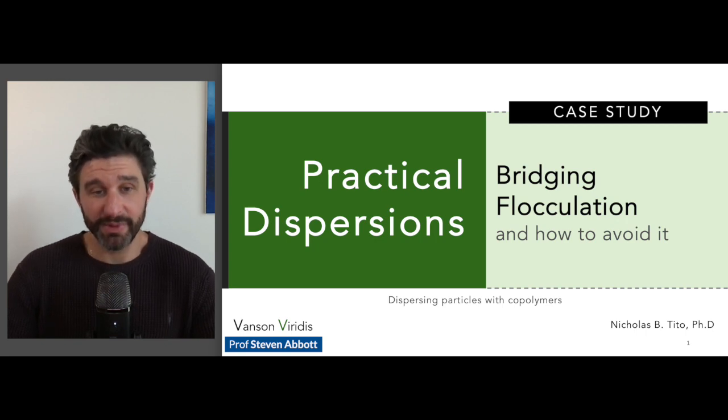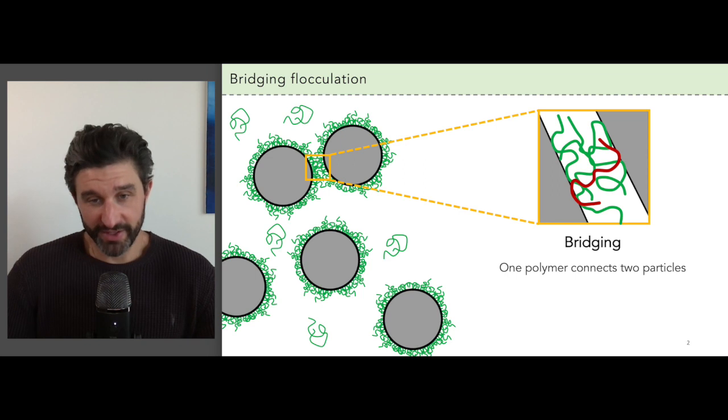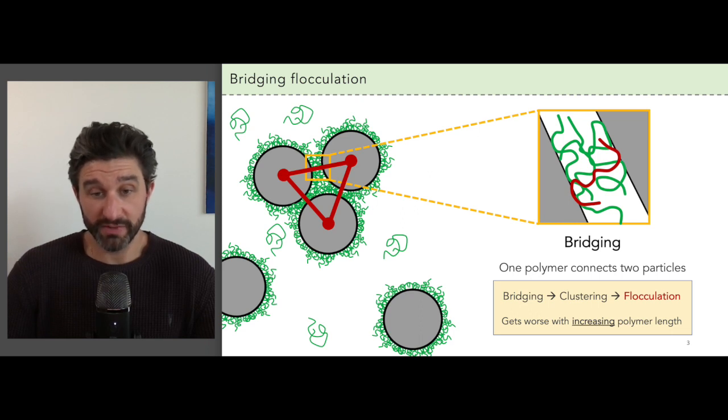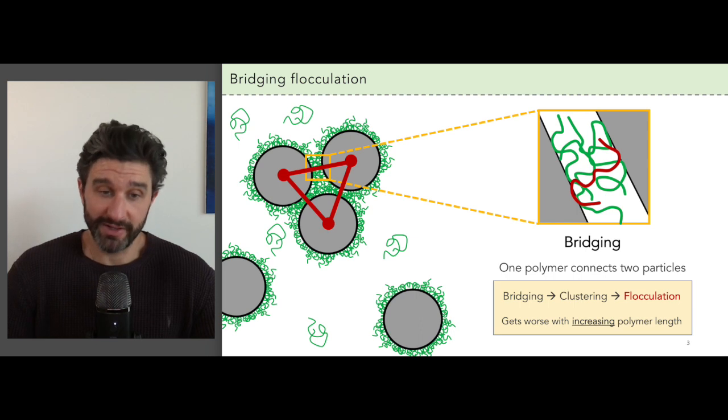In this case study we examine bridging flocculation and why it happens as well as how to avoid it using copolymers as dispersants. Bridging flocculation happens when one polymer connects two particle surfaces. This bridging actually causes the formation of clusters between the particles and if the clusters get big enough you end up with flocculation.